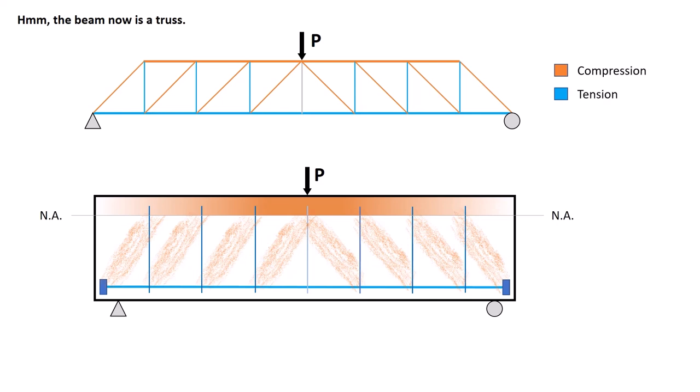Finally we got an analogous truss mechanism in the beam. There are certain conditions to satisfy to fully realize such truss mechanism in reinforced concrete beam. Such requirements are covered in chapter 23 strut and tie models of ACI 318 building code.